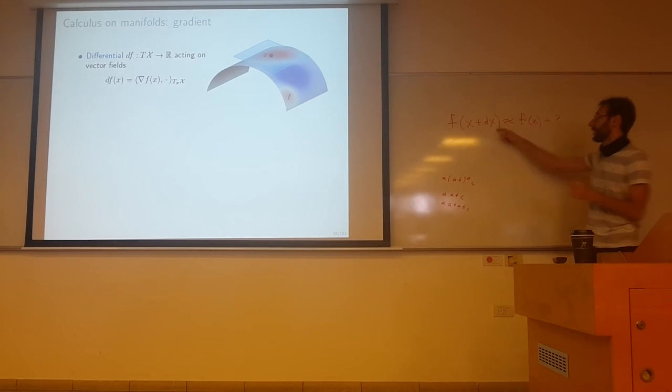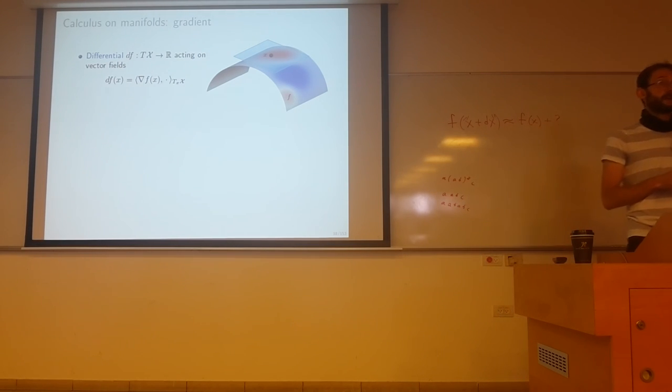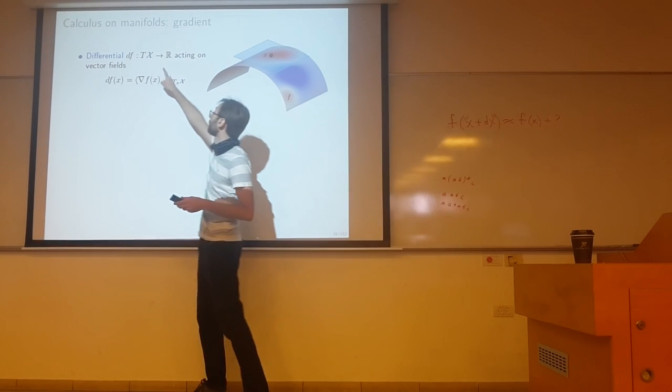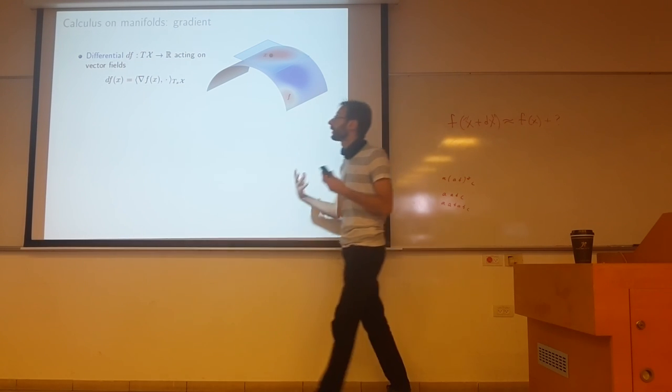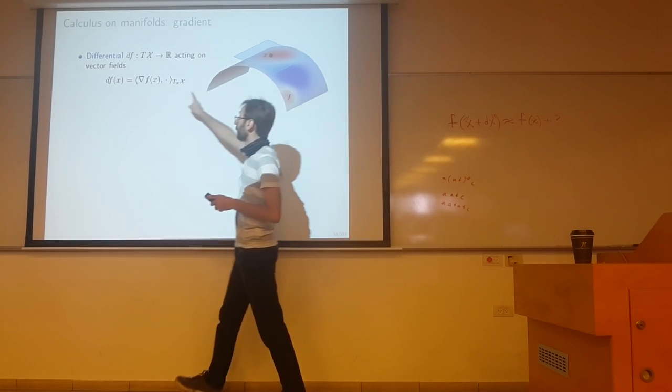Now on the manifold, this thing is not even defined. So instead of naively writing x plus dx to perturb a point, you need to apply a vector field, or tangent vector. Basically a differential, it's a map that maps from the tangent bundle to R, say if you're talking about real fields, and it acts on vector fields.